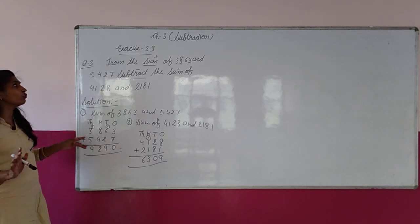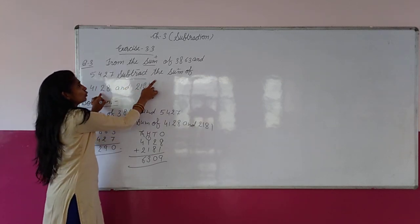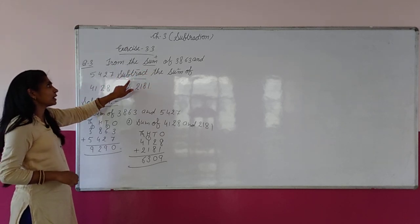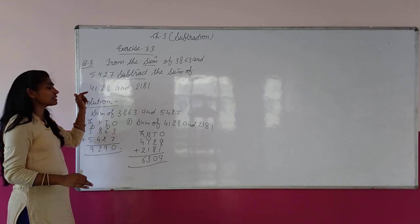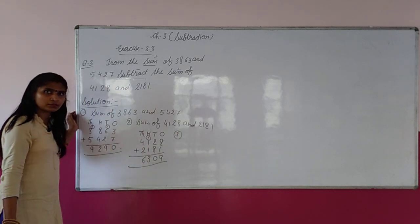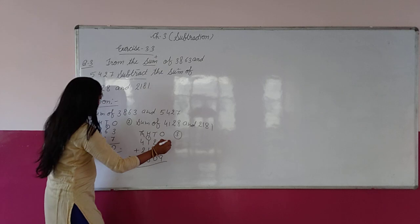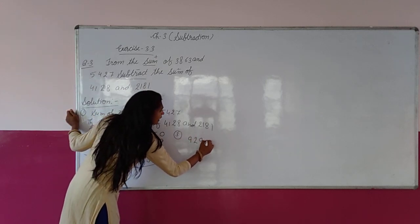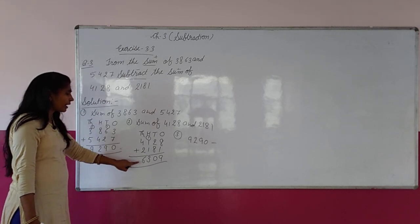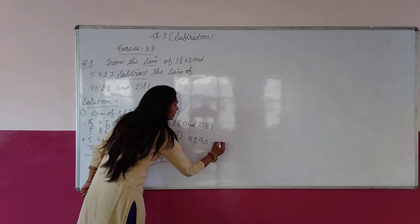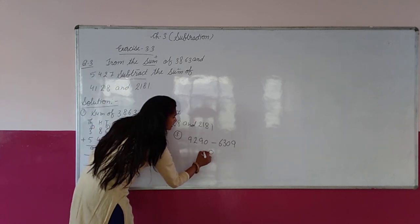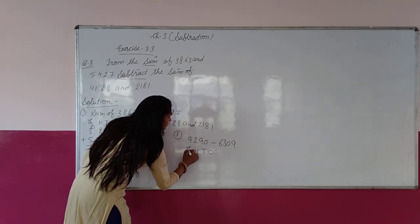अब 3rd work करना है. जो first two numbers का sum आया उसमें से second two numbers का sum subtract करना है. So: 9,290 minus 6,309. Ones, tens, 100, 1000 columns में: 9,290 minus 6,309. 9 subtract from 0? Not possible.